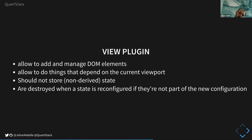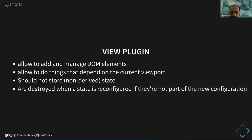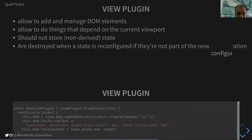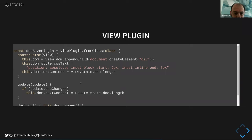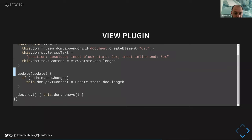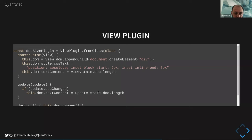Another source of extensions is view plugins. View plugins are used to add and manage DOM elements and do things that depend on the current viewport. View plugins should not store state — basically they are for decorating things, and you retrieve state if you need it from the state object. When you reconfigure the editor state and view plugins are not included in the new configuration, they are removed. A view plugin is defined from an anonymous class — you provide a constructor, an update function, and a destroy function.